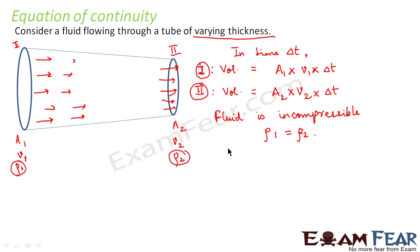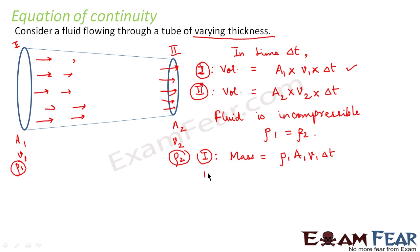Since density is the same, we can write the expression for mass. Around end 1, the mass will be nothing but density into volume — that is rho1 times A1 times V1 times delta T. Similarly, the mass across the second end would be rho2 times A2 times V2 times delta T.